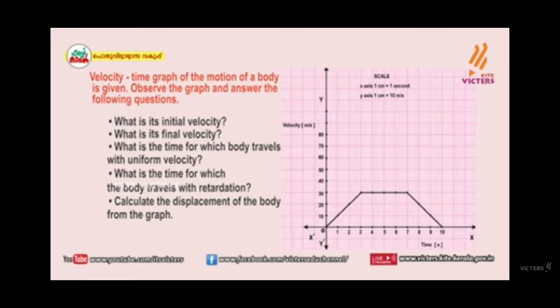First, observe the graph and answer the following questions. Question number 1: What is the initial velocity? Second: What is the final velocity? What is the time for which the body travels with uniform velocity? What is the time for which the body travels with retardation? Calculate the displacement of the body from the graph.